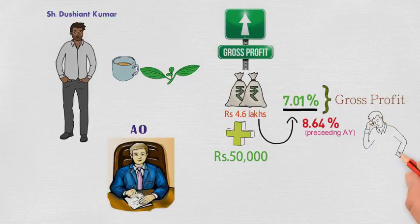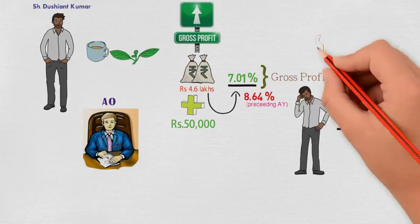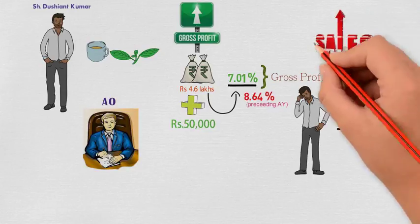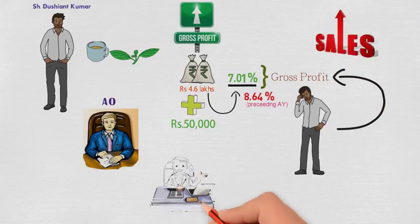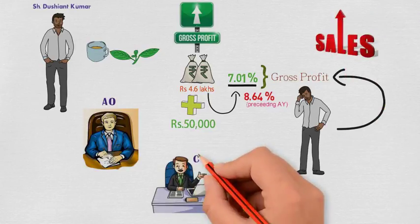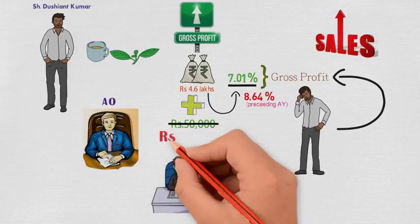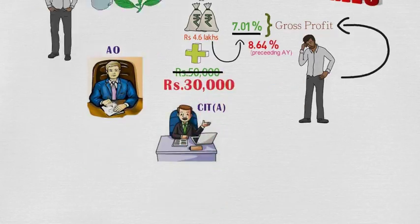The assessee contended that the reduced gross profit was for achieving higher sales. The CIT(A) although reduced the above addition of Rs 50,000 to Rs 30,000.